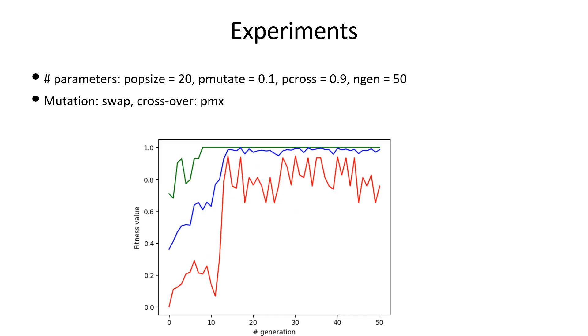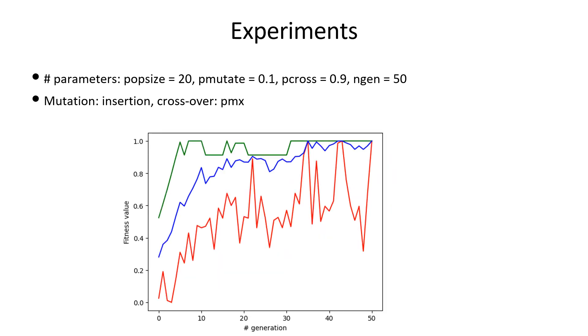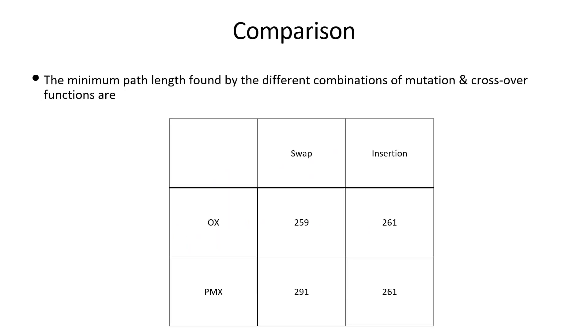Experiments with crossover method PMX and insertion mutation were also conducted. A comparison of the minimum path length is shown in the table. Note that the values are close but the minimum is obtained by swap mutation and OX crossover.